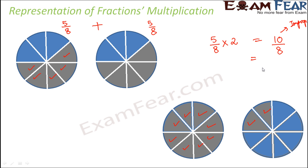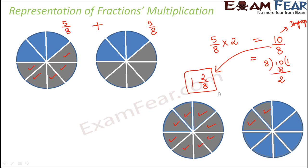This is an improper fraction. Converting 10 over 8 to a mixed fraction: 8 goes into 10 once with a remainder of 2, so it becomes 1 and 2 eighths. That is exactly what the images show — one completely shaded circle represents the 1, and in the second circle only 2 out of 8 parts are shaded, representing 2 eighths.